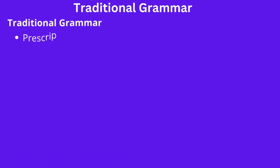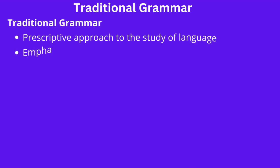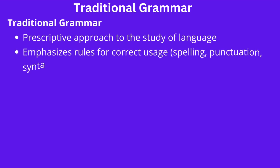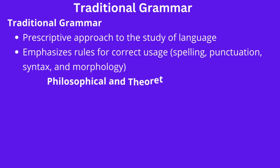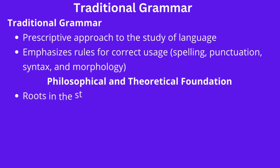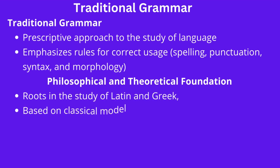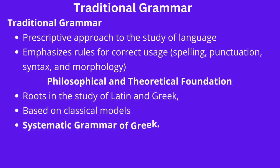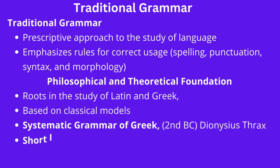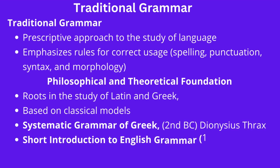Traditional grammar is a prescriptive approach to the study of language that emphasizes rules for correct usage. It is often focused on the written form of the language. TG is a prescriptive approach that focuses on the rules of language usage such as spelling, punctuation, syntax, and morphology. It often involves the study of parts of speech, verb tenses, and sentence structure, and aims to establish norms for correct language use. Traditional grammar is often associated with formal education and is frequently taught in schools.